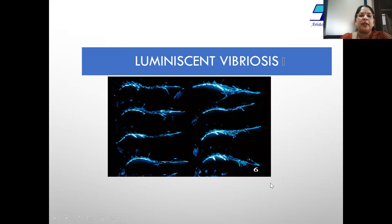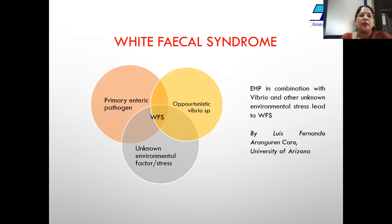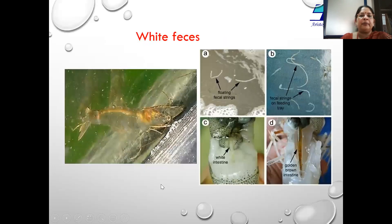Although there are numerous problems caused by vibriosis, the major one is luminescent vibriosis. Of late, there is huge production loss because of white fecal syndrome. A recent literature from the University of Arizona postulates that white fecal disease is a combination of three factors: first, EHP, an enteric pathogen; second, presence of Vibrio; and third, environmental stress. These three together result in white fecal disease.